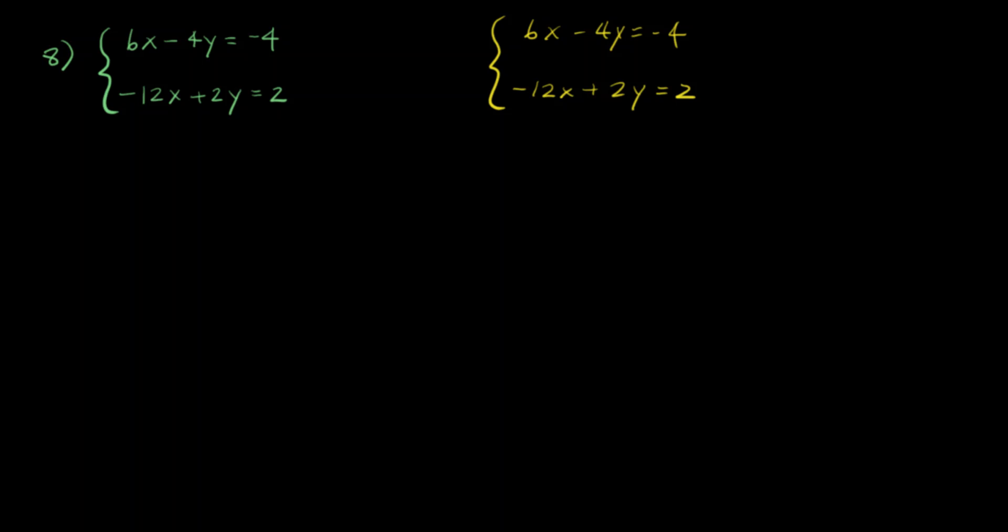Okay, let's solve number eight. I'm going to show you two ways. The first one, we're gonna try to get rid of the x. So to get rid of the x, this needs to be positive 12. To get it to positive 12, we multiply the entire equation by 2.